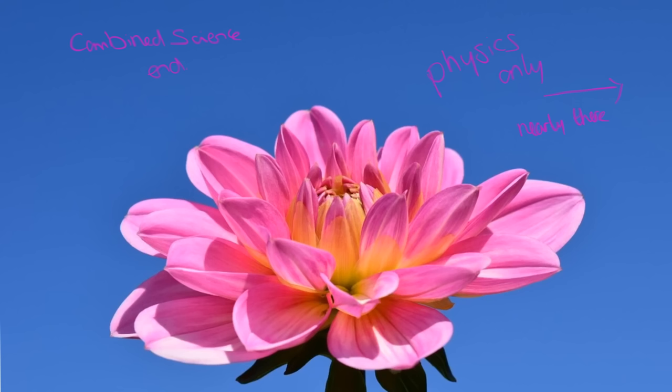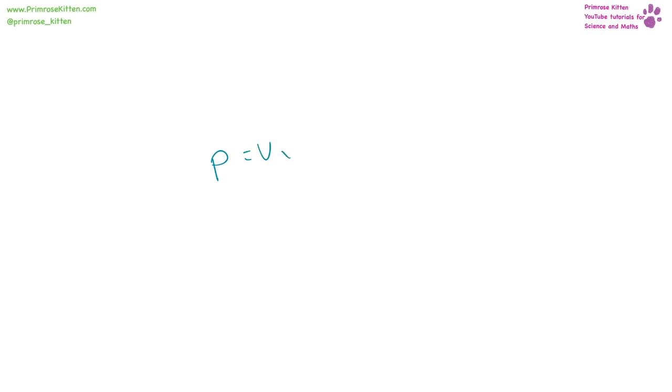If you are doing combined science, this is the end for you — excellent work. If you are doing physics, you need to keep going a little bit longer. If we want to work out the pressure in a system, that is pressure times volume equals a constant — the constant will be given to you in the exam. Our units for pressure are pascals and our units for volume are meters cubed.